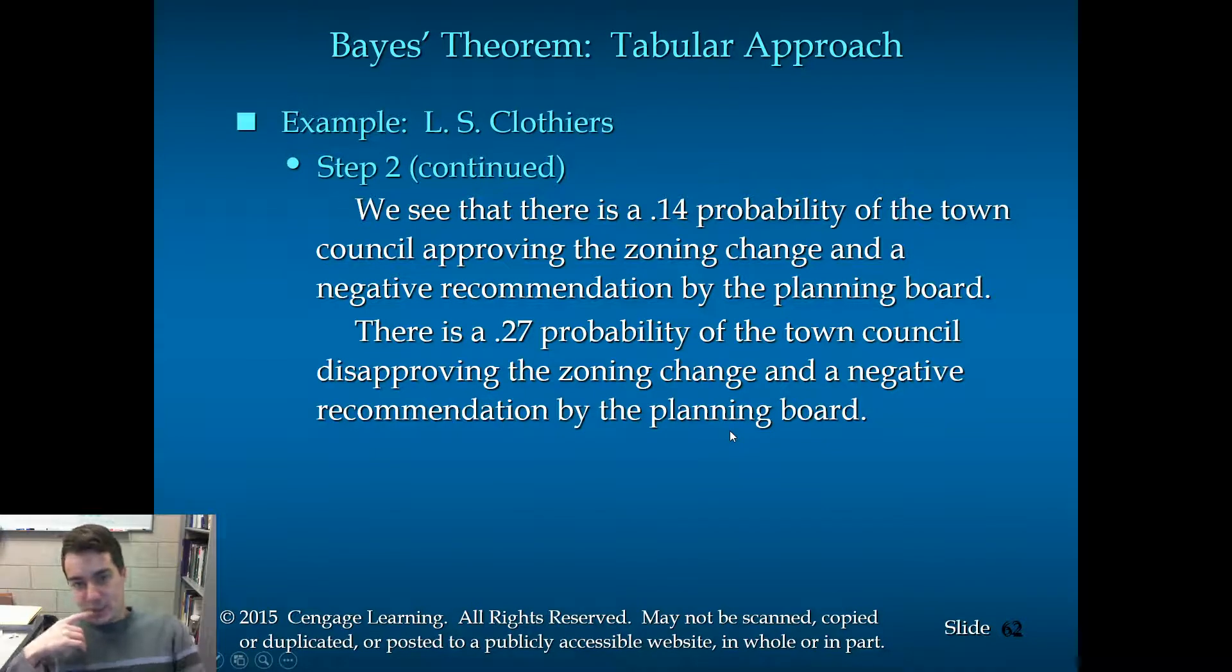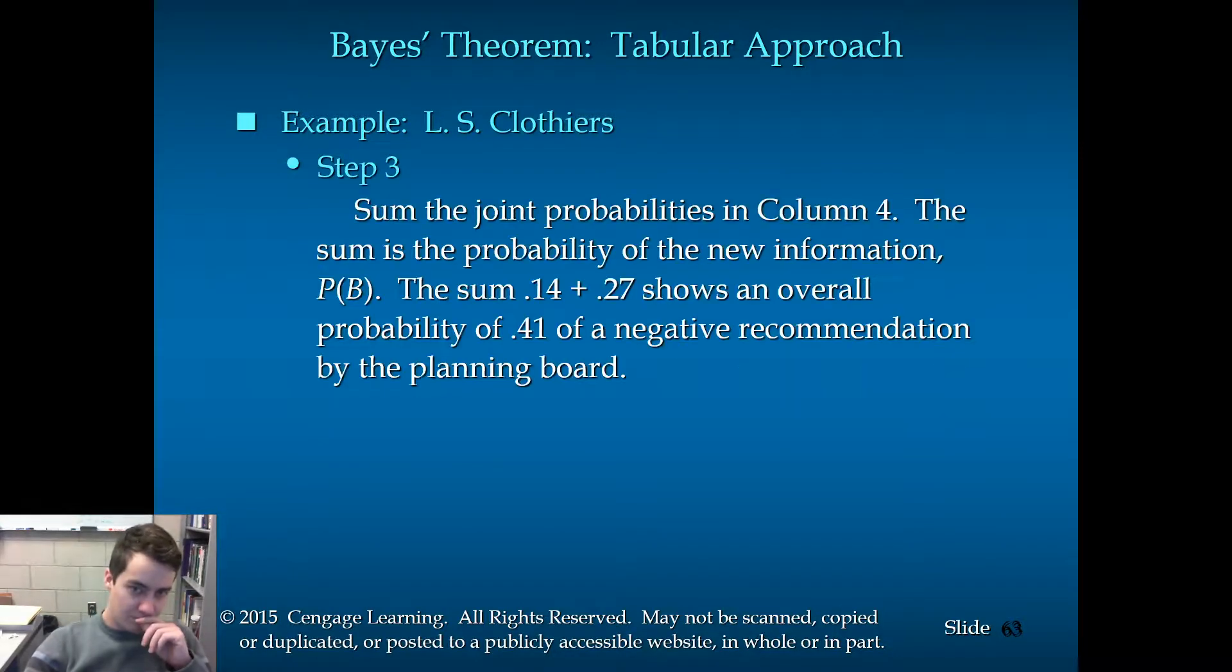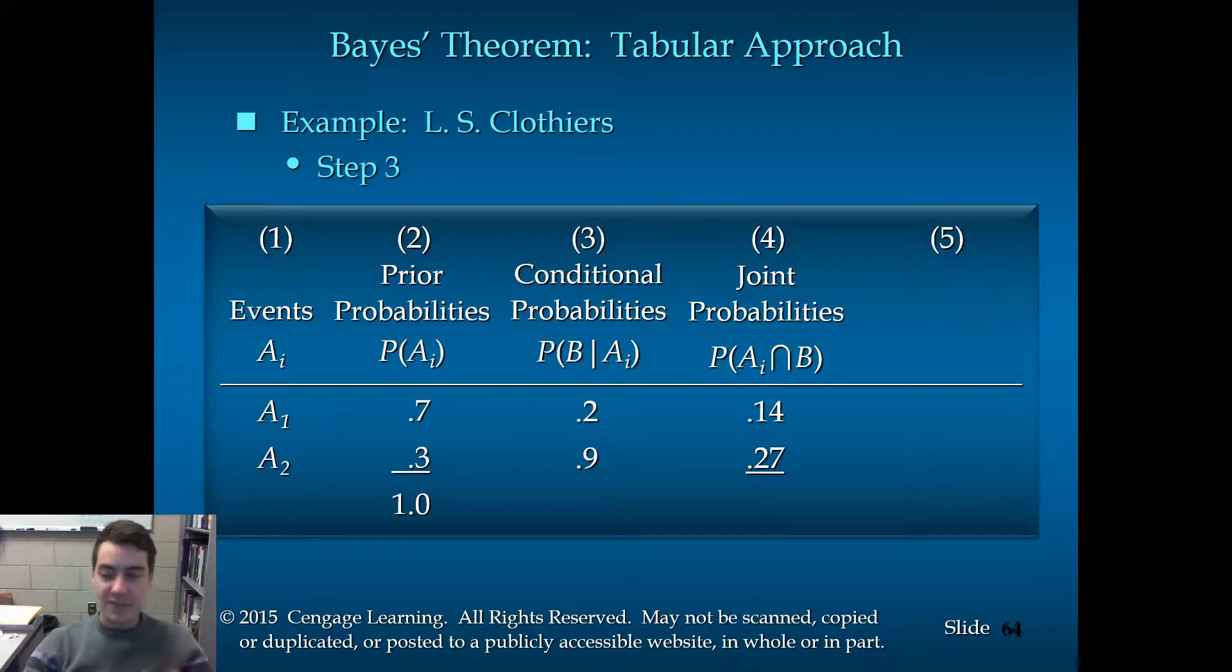Now, that tells us the 0.14 probability of the town council approving the zoning change and a negative recommendation by the planning board. And a 0.27 probability of the town council disapproving the zoning change and a negative recommendation by the planning board. Step three. Sum the joint probabilities in column four. And this is the probability of the new information which we're calling event B. So, the probability of B. In which case, we see 0.14 plus 0.27 showing an overall probability of 0.41 of a negative recommendation by the planning board. We simply add in probability of B equals 0.41. And that takes us to column five.